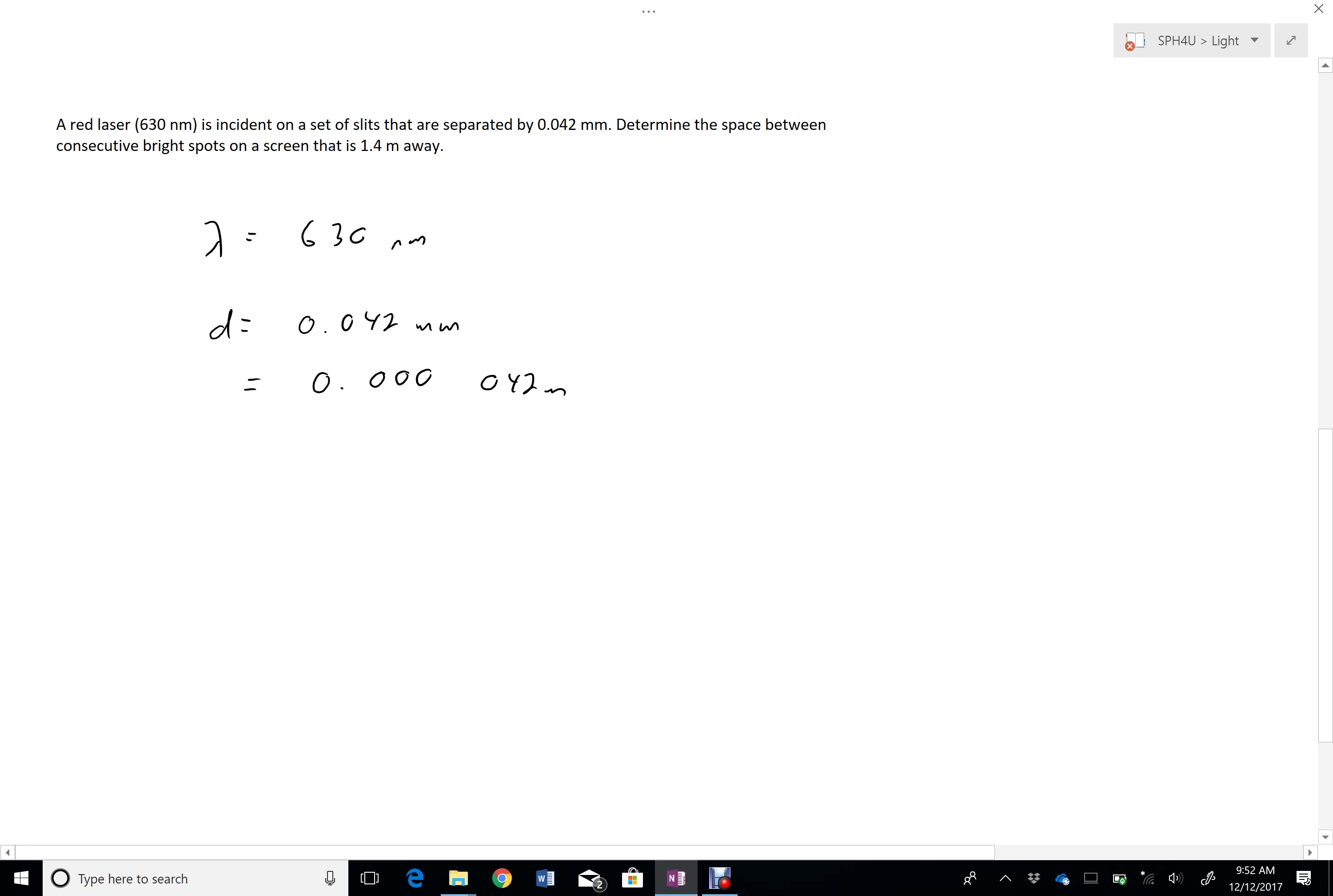Determine the space between consecutive bright spots on a screen that is 1.4 meters away. L is 1.4 meters. So we're looking for delta Y here. Lambda L over D.